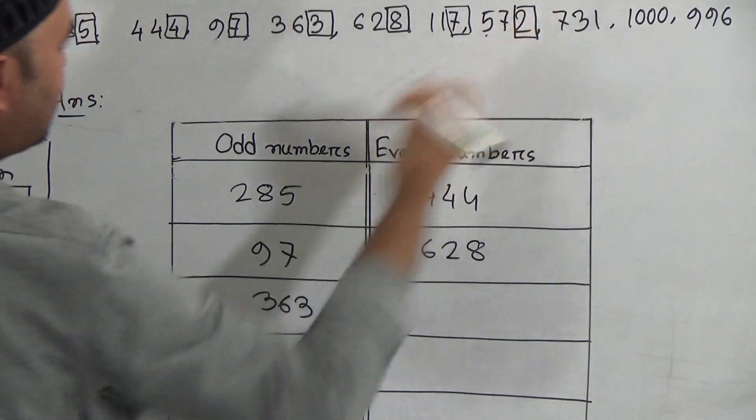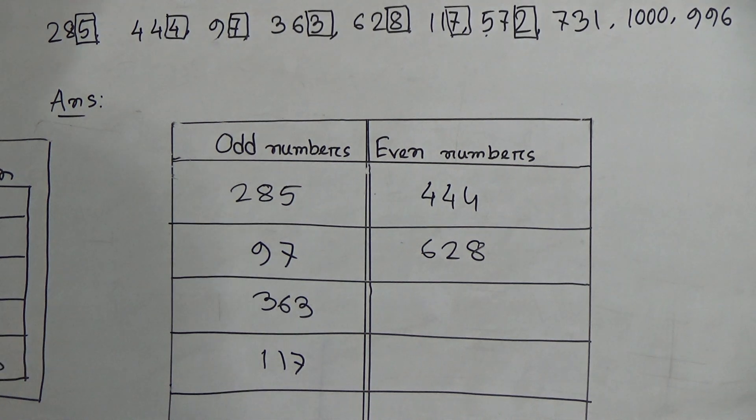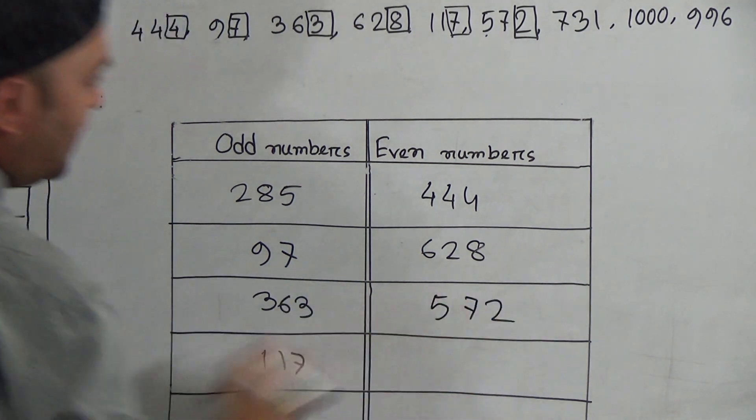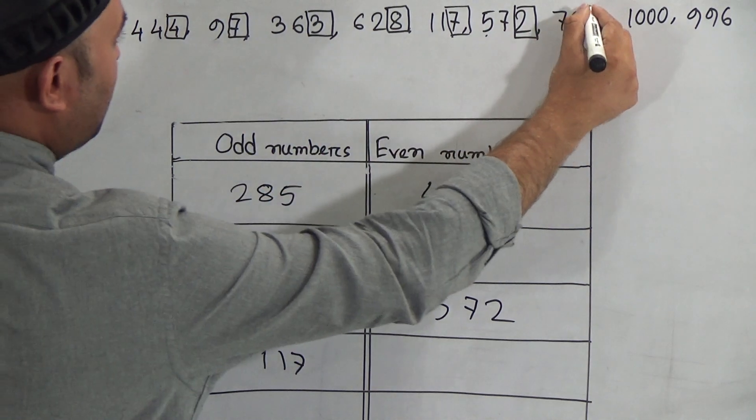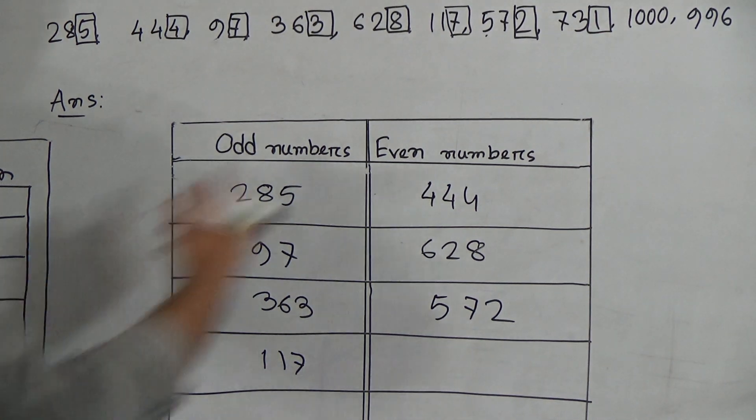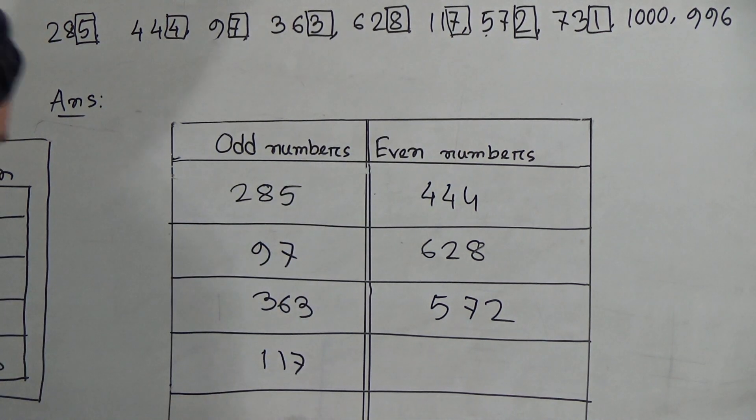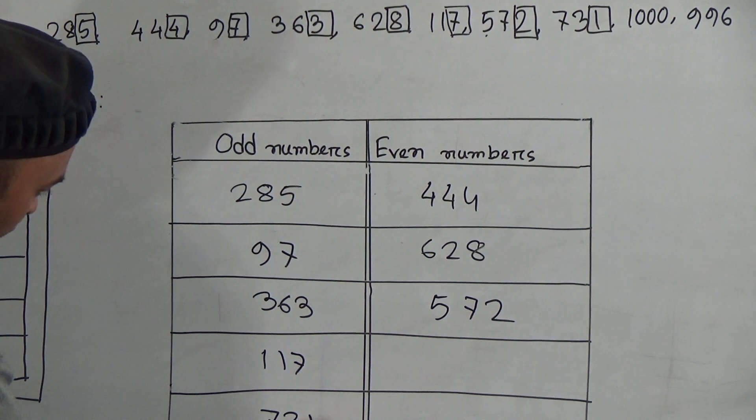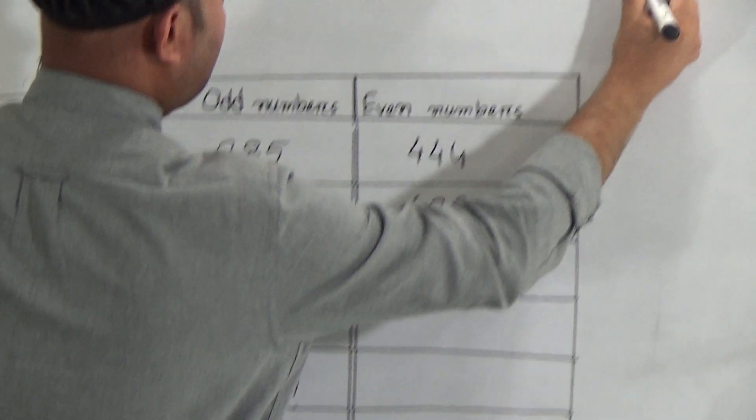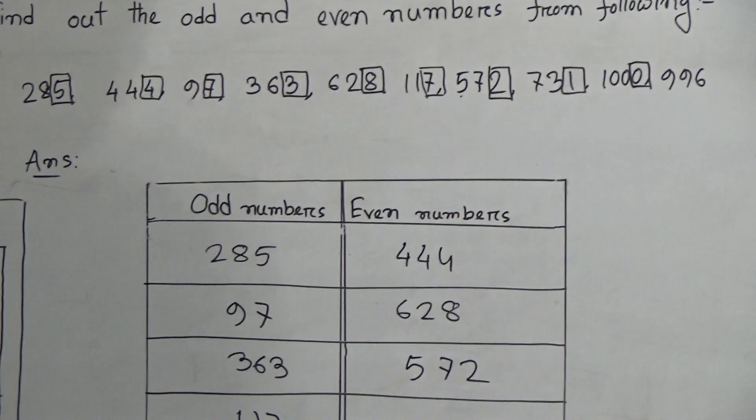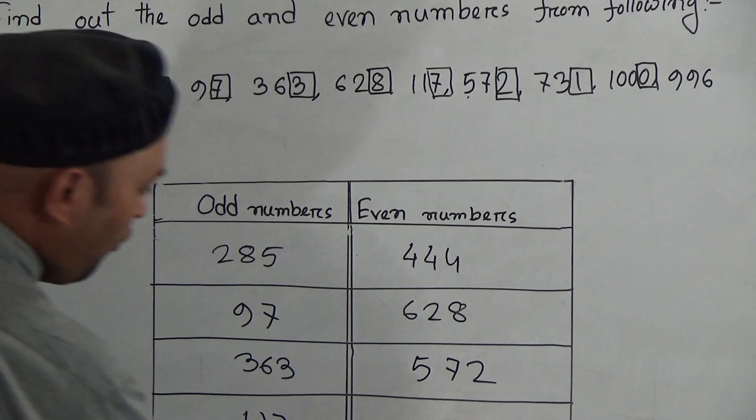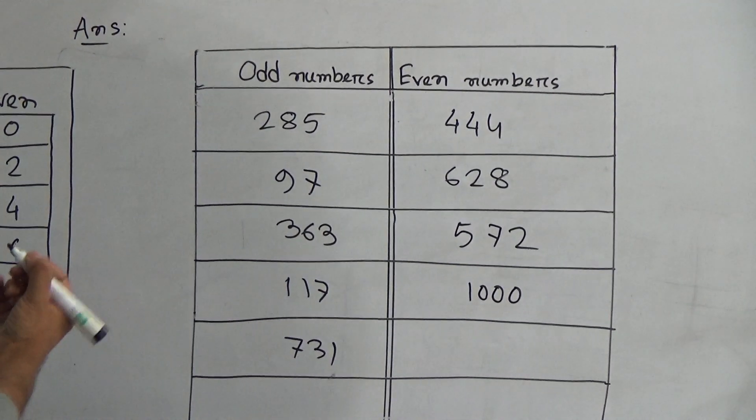731. 1 is the last digit, so 731 is an odd number. And here is 1000. 0 is the last digit. We know that 0 is the symbol of an even number, so 1000 is an even number.